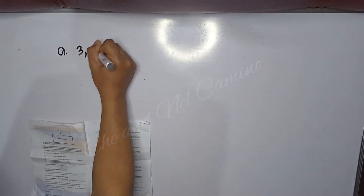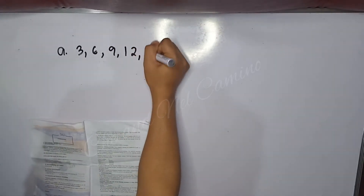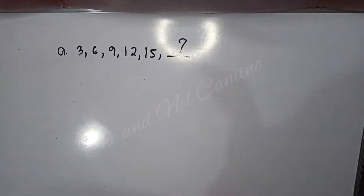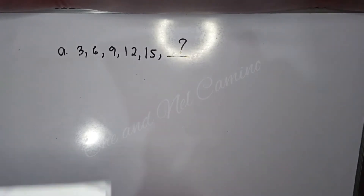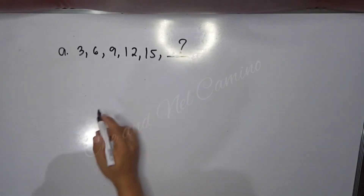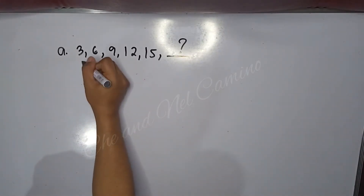In this do-it-yourself activity, you are going to predict the next number in each of the following lists. Let's take letter A: we have 3, 6, 9, 12, 15, and a blank. We are going to use inductive reasoning to fill in the blank and predict the next number after 15. We can find the next number by finding the common difference.